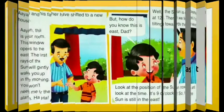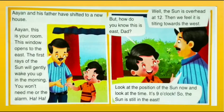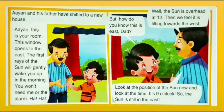Let's read this picture story. Ian and his father have shifted to a new house. His father says: 'Ian, this is your room. This window opens to the east. The first rays of the sun will gently wake you up in the morning — you won't need me or the alarm.' Ian asks, 'But how do you know this is east, Dad?' His father replies, 'Well, the sun is overhead at 12, then we feel it is tilting towards the west. Look at the position of the sun now and look at the time — it's nine o'clock, so the sun is still in the east.'